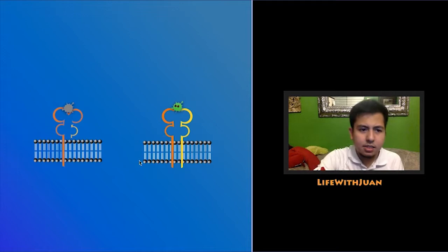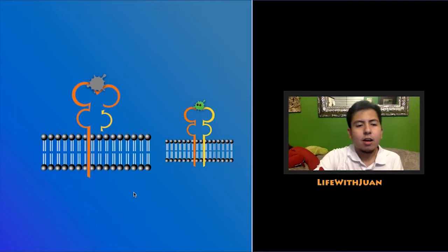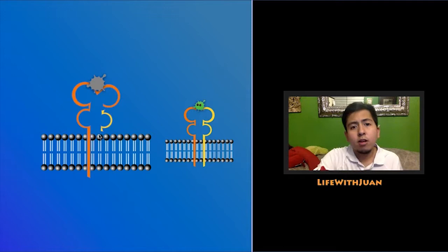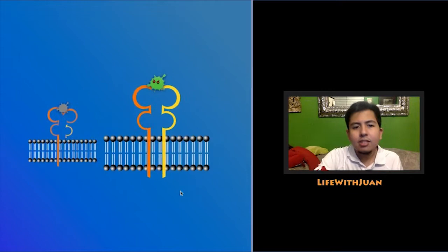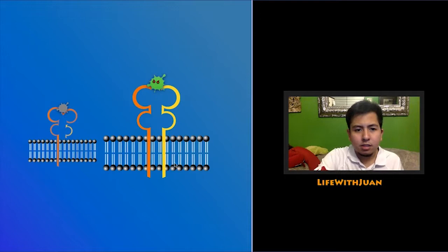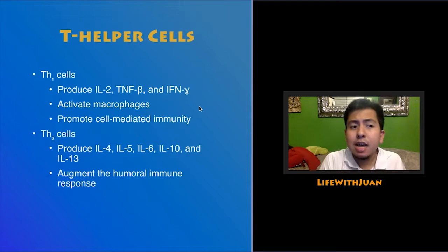MHC1, on the left, has a long chain and a short chain. The long chain presents the corrupt self-antigen for recognition by the cytotoxic T cell. MHC2 has two long chains and presents viral or bacterial antigen on macrophages and dendritic cells, activating the T helper cell to augment the immune response.